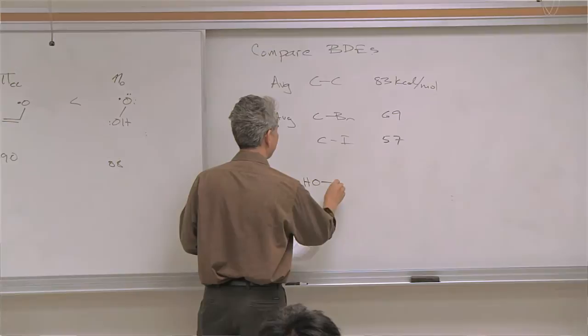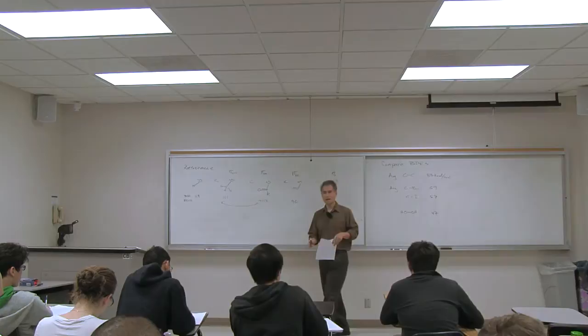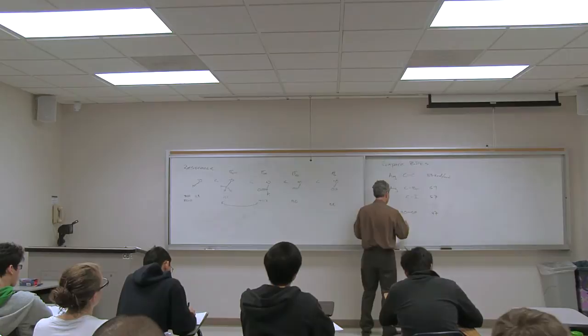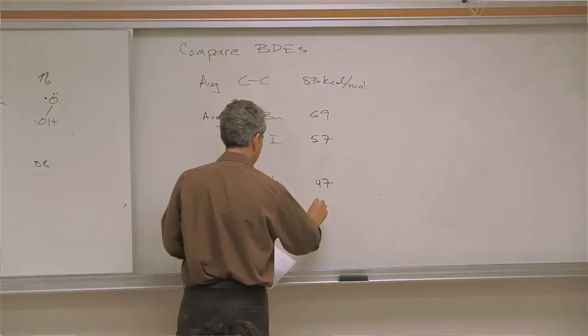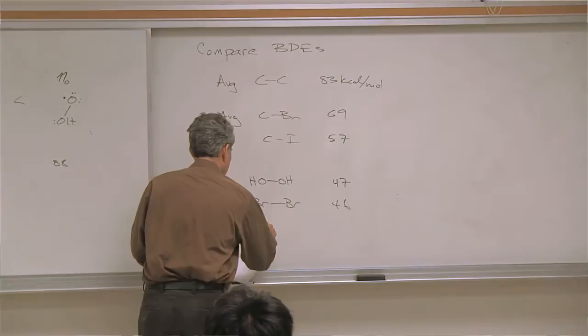Let's look at some really weak bonds. Hydrogen peroxide — don't heat peroxides because they will homolyze, and don't put them in light either, as that will induce homolysis. That's a weak bond. Heteroatom–heteroatom bonds are generally quite weak: bromine–bromine can be gotten to homolyze, iodine–iodine bonds at 36 kcal/mol are very weak.